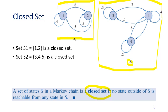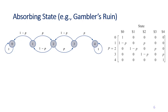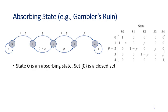Now there is a state called an absorbing state. In the gambler's ruin example, state 0 is an absorbing state, and the set containing only node 0 is also a closed set. Absorbing means that if you are already in this state, you cannot go anywhere else — the arrow goes from 0 back to 0 itself with probability 1. Once you've reached node 0, you will always be in that node in the next time step and all future time steps.